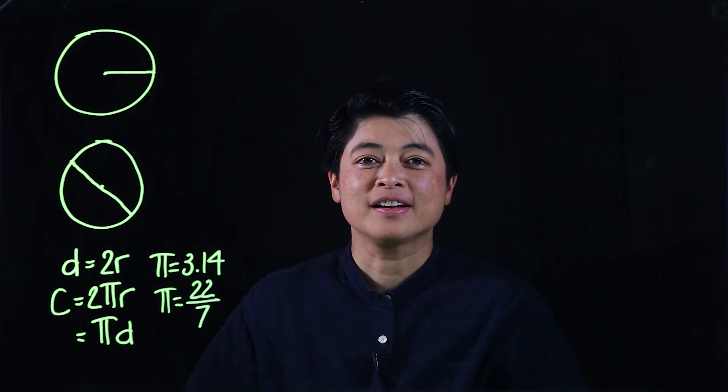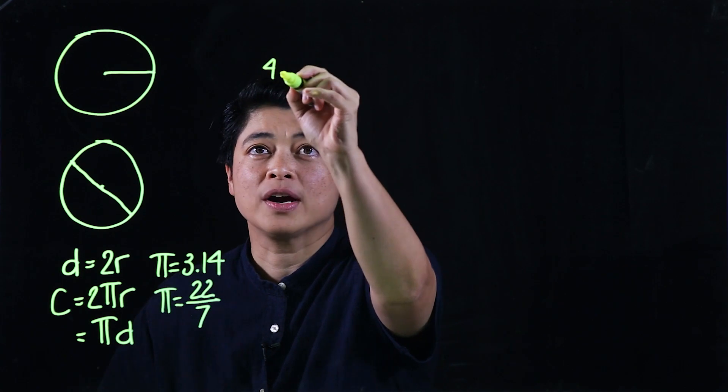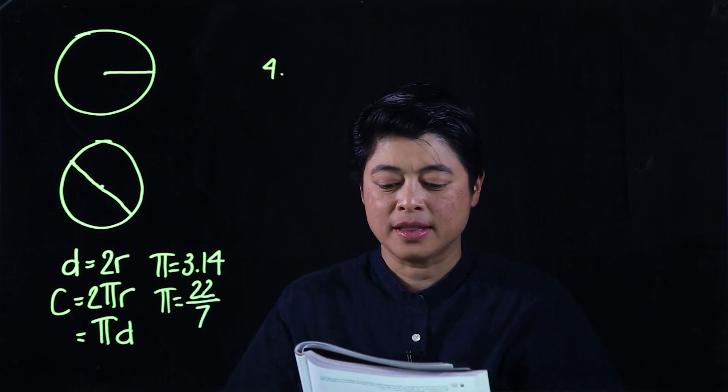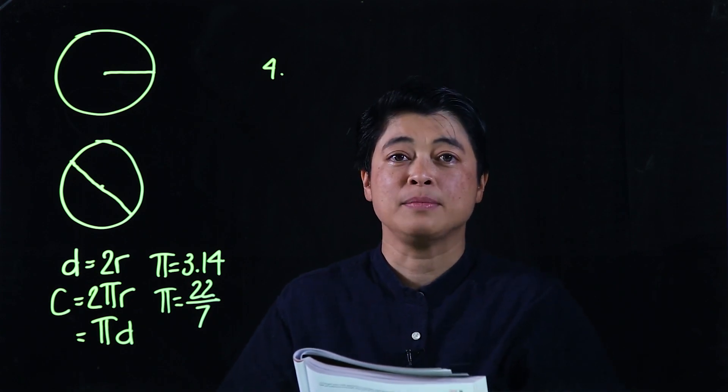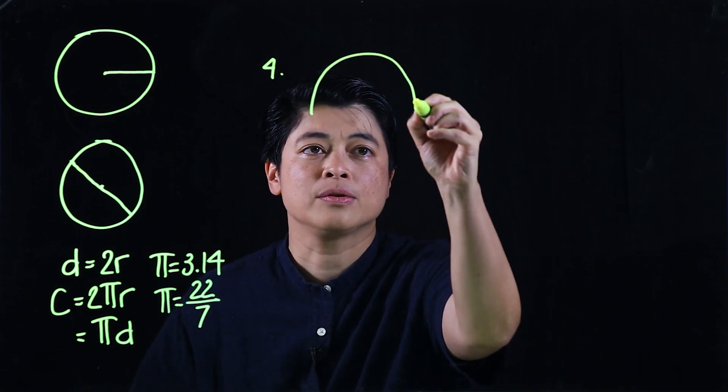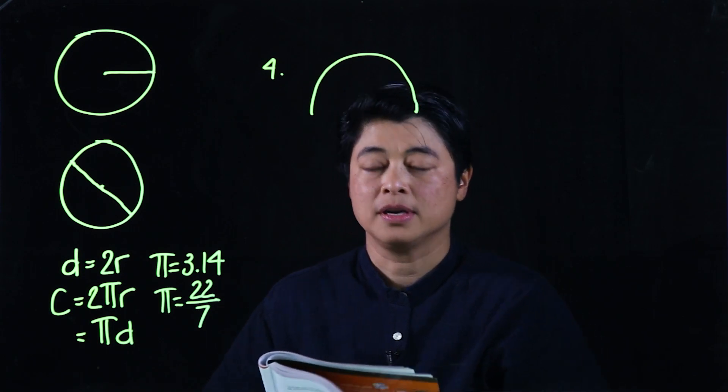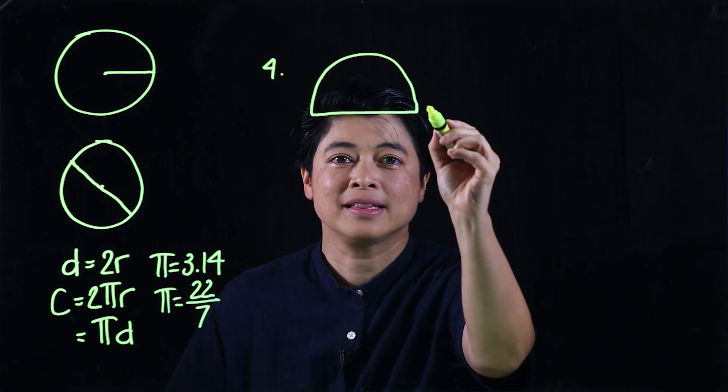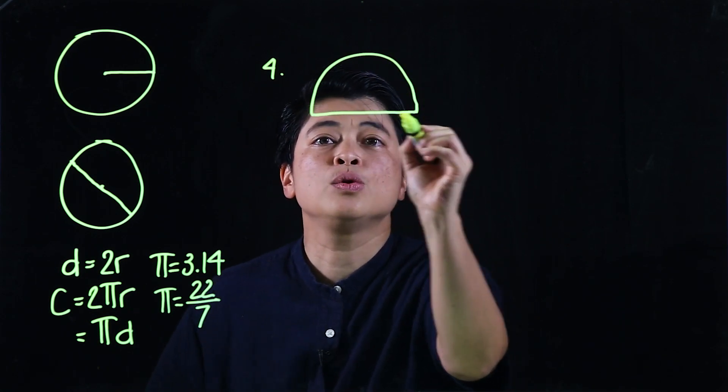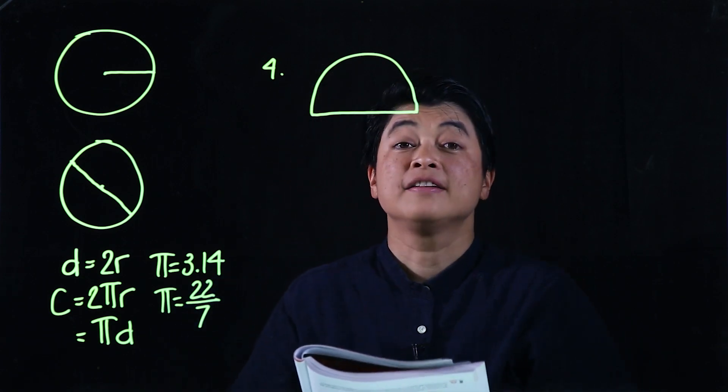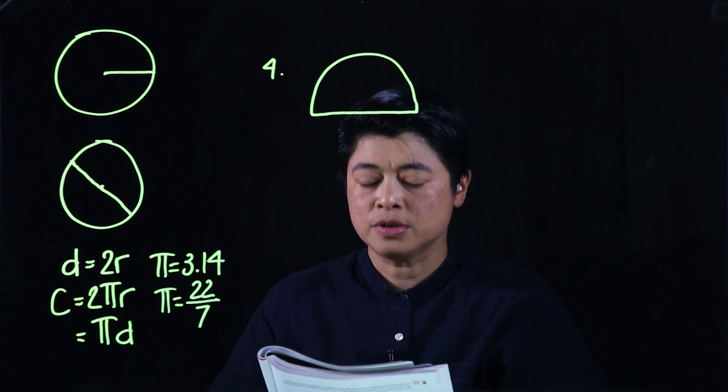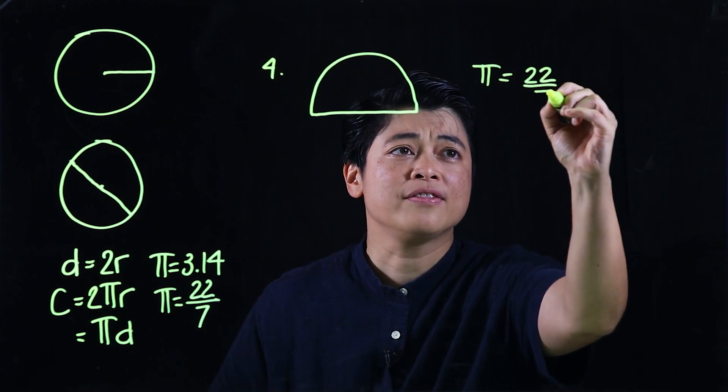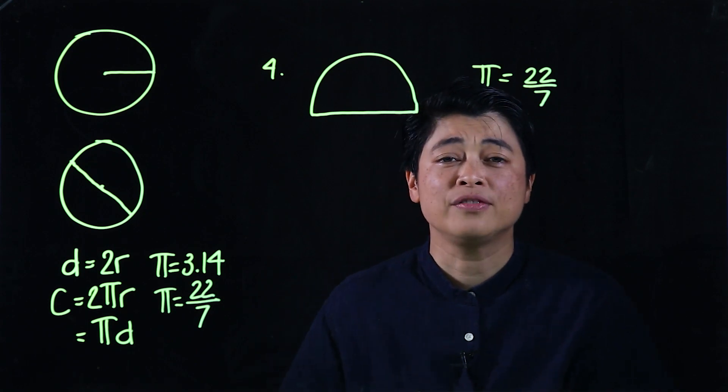Continuing on to page 145, problem number 4 says: a wire is bent into a semi-circle with a diameter of 21 centimeters. It says find the perimeter, but it wants including that. So it's misleading that it bent it into a semi-circle - it's including this. The problem says find the perimeter using 22/7 as pi.